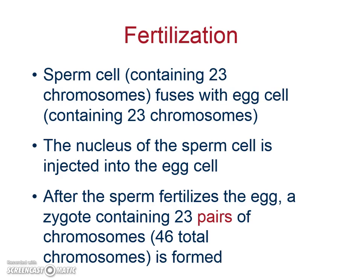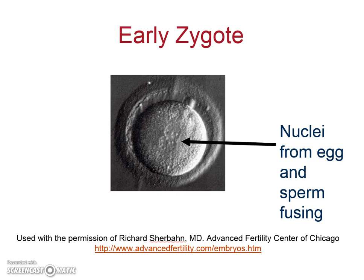We call the fertilized cell a zygote — a zygote has the normal chromosome number, whereas our sex cells only have half. This is a picture of an early zygote under a microscope. You can see the egg with two little cells in the middle that look like they're starting to grow — that zygote is the sperm and the egg that have come together and are starting to fuse.